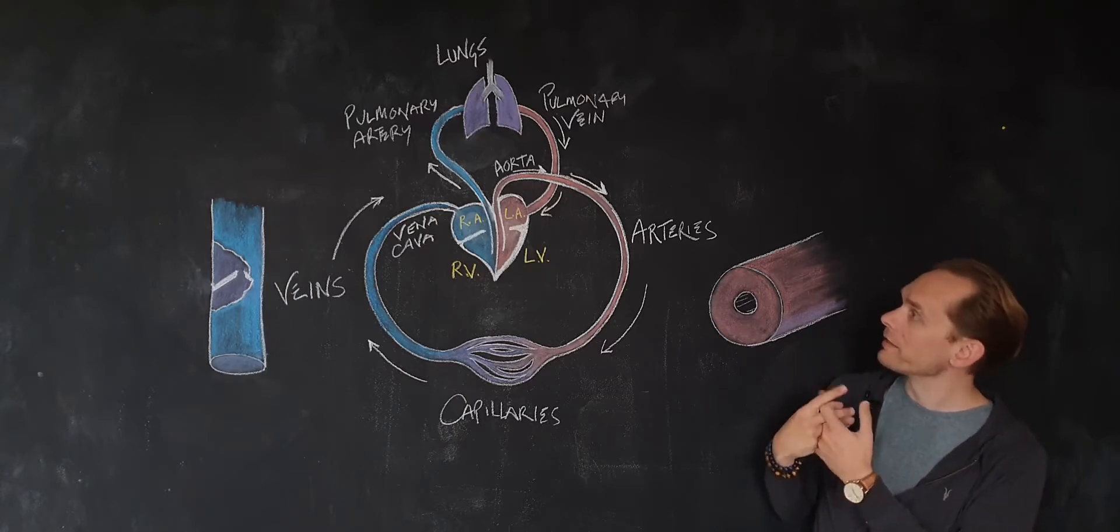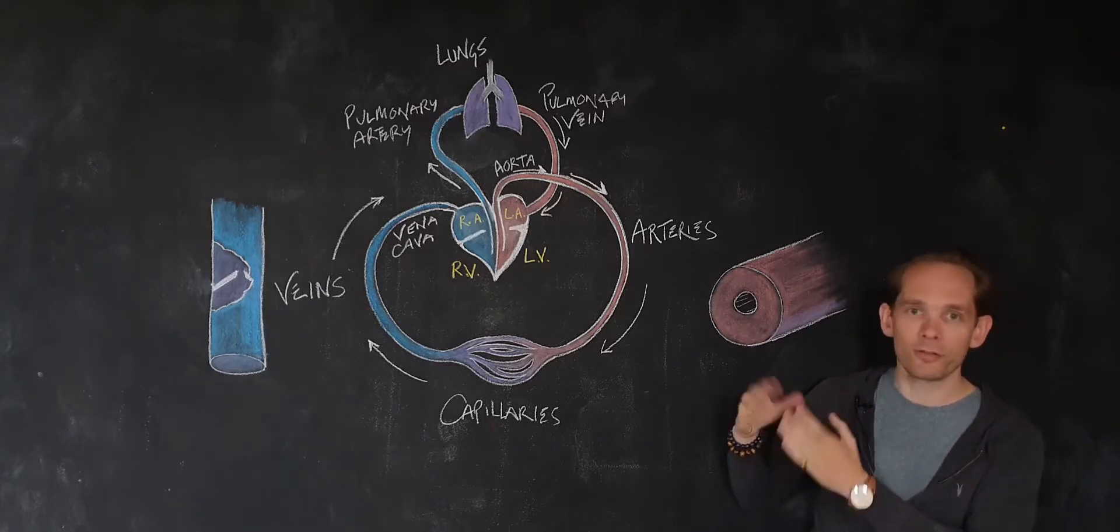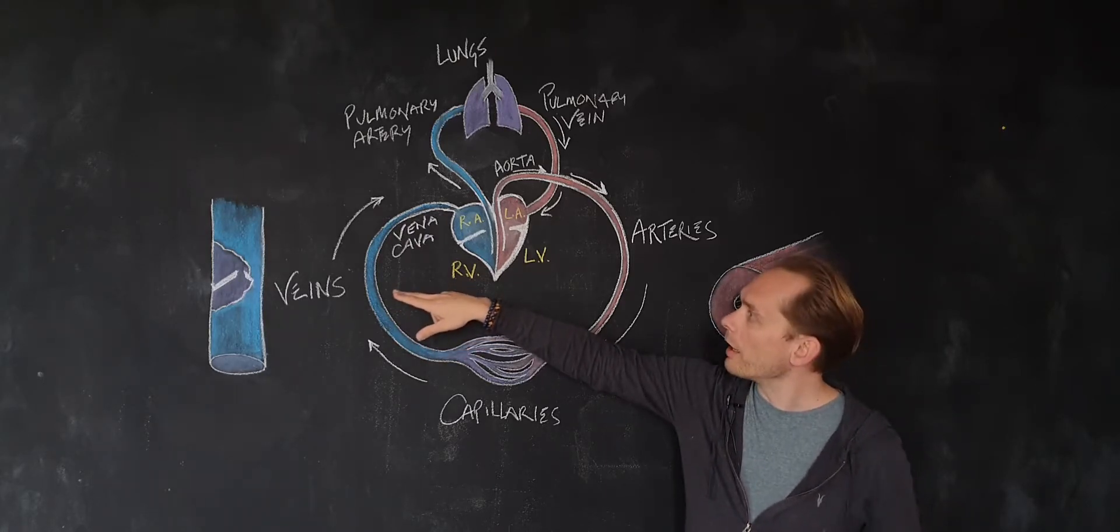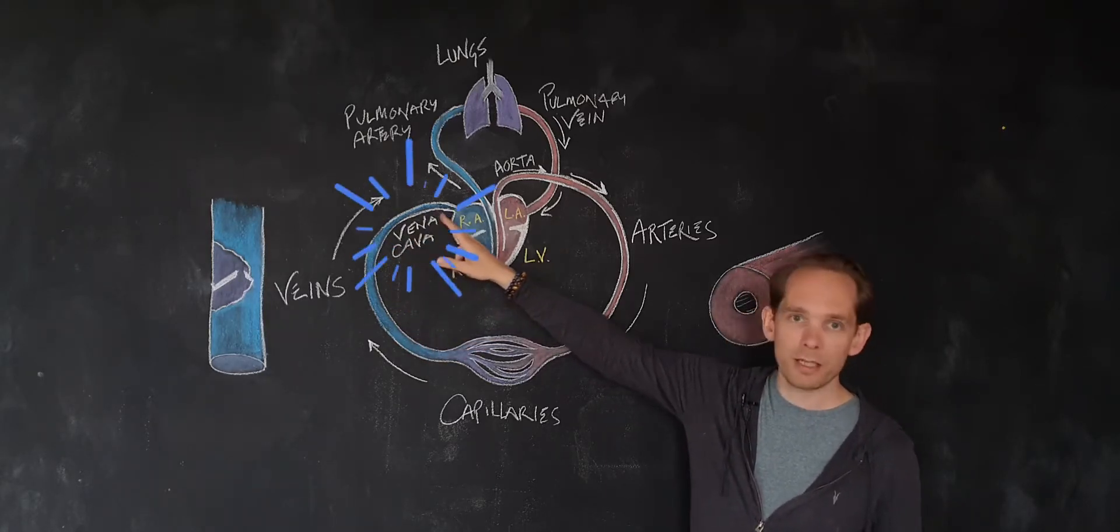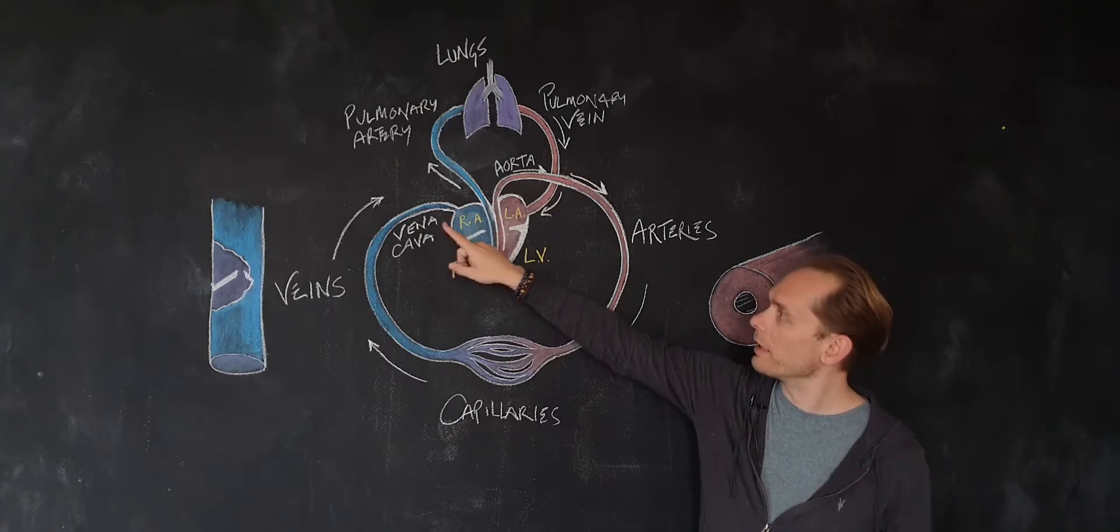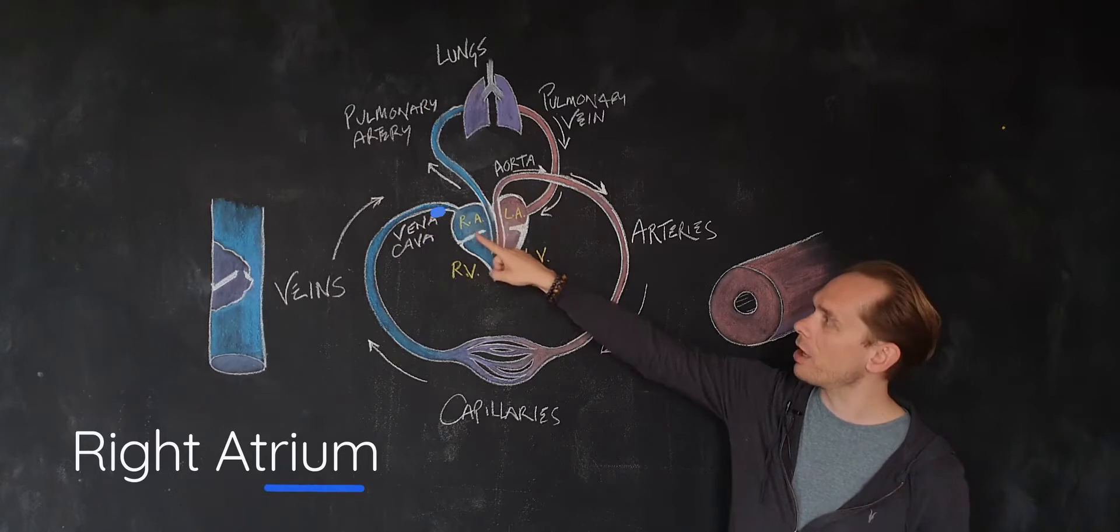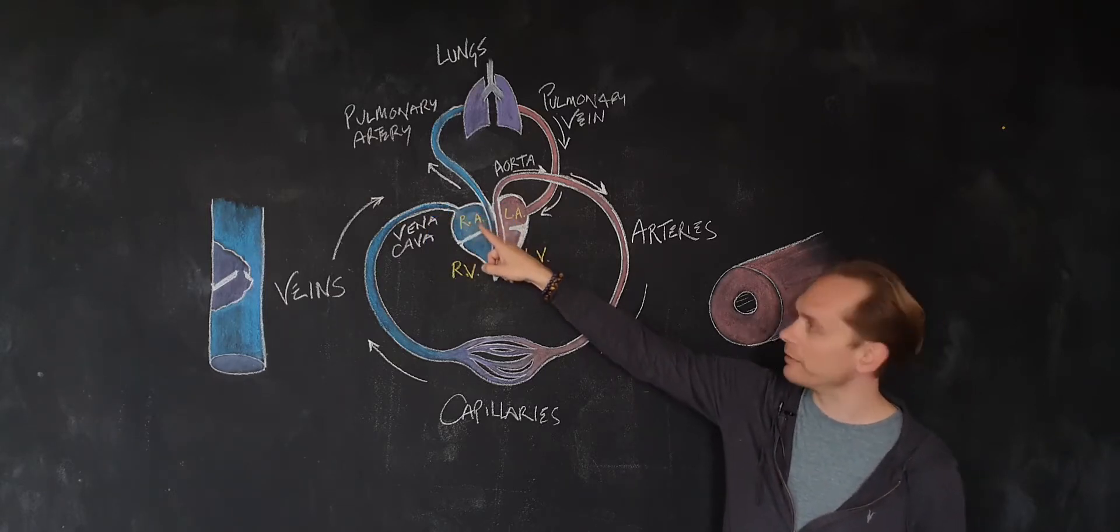So that said, let's just go through the process. We'll start here on the left with blood coming back from the body, ultimately via the vena cava (or vena cava, depending on how you say it), into the right atrium. So I've put these little abbreviations—RA is right atrium—that's what receives the blood.